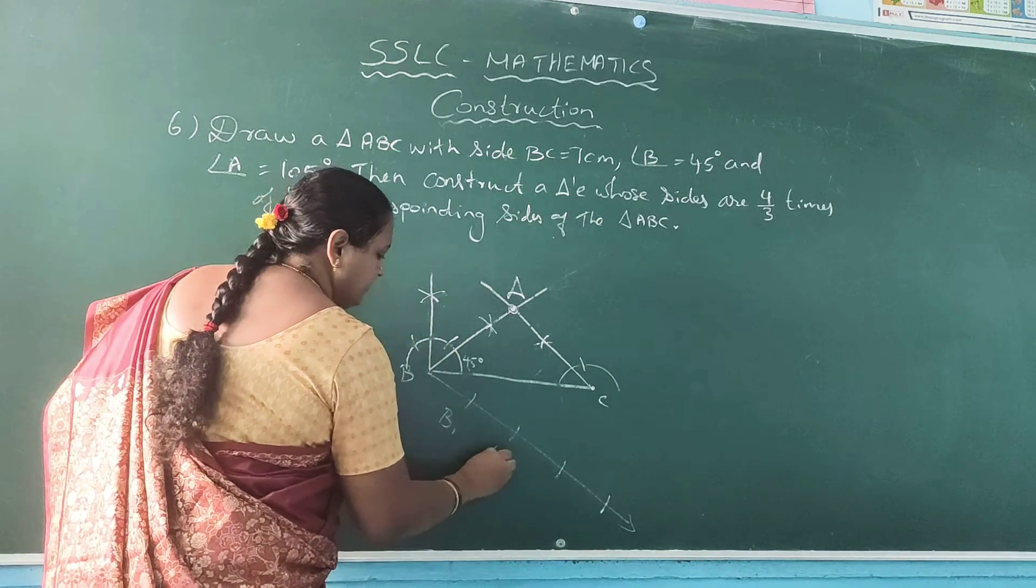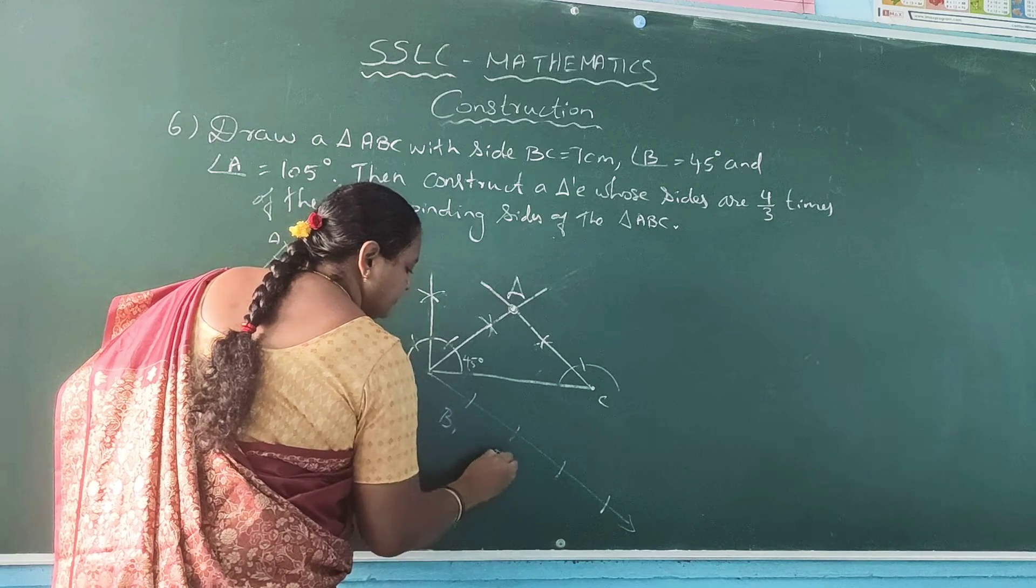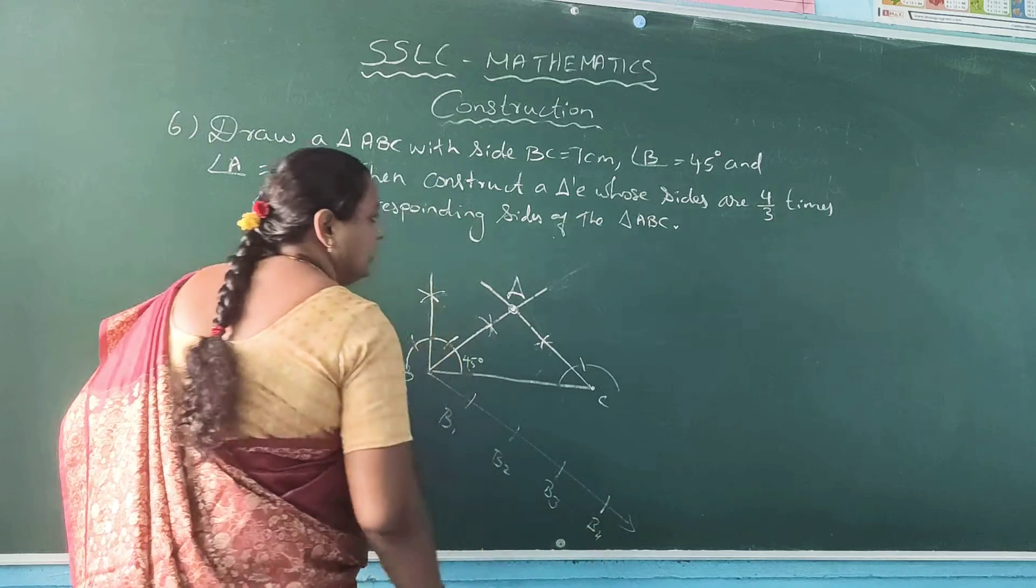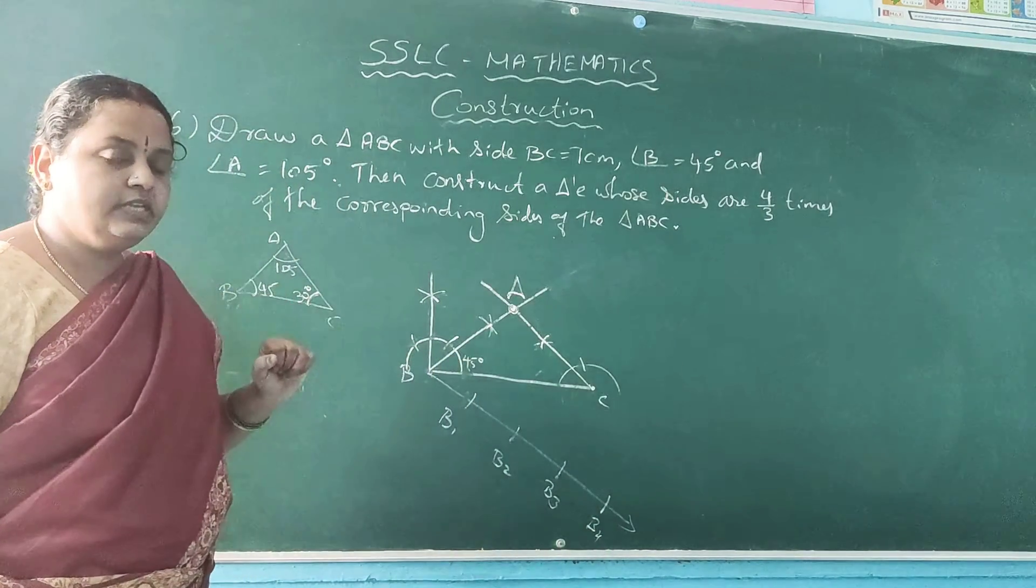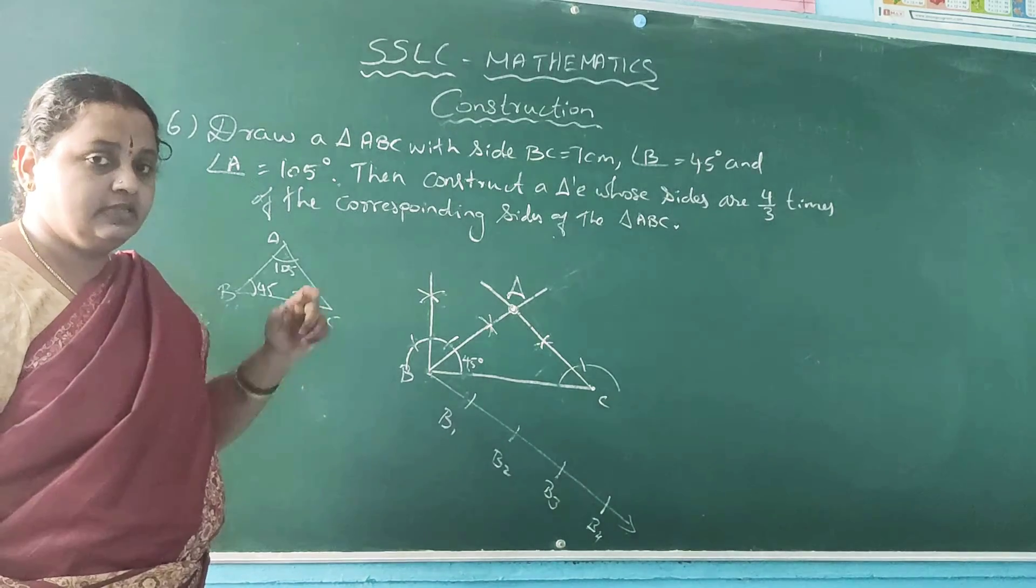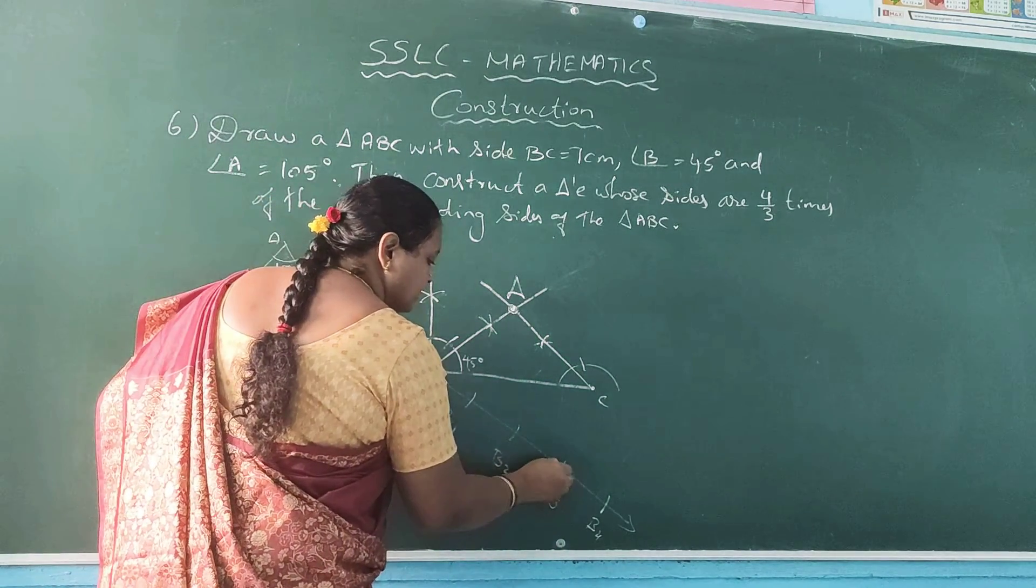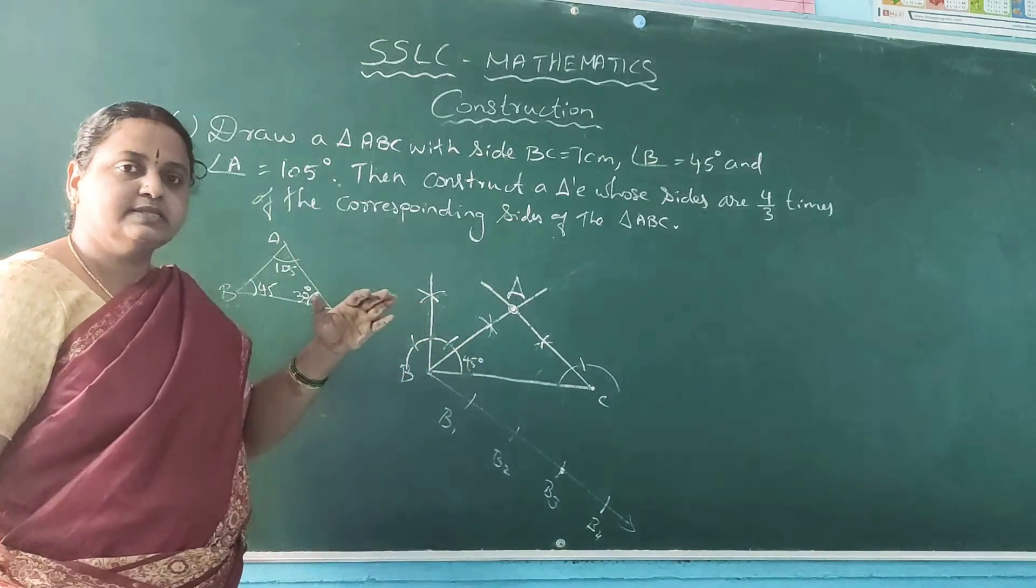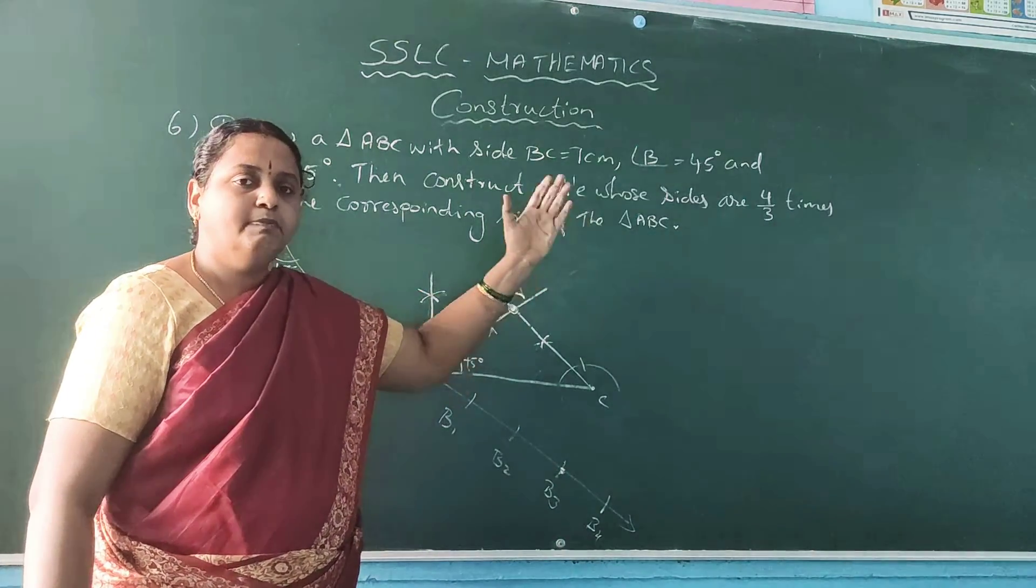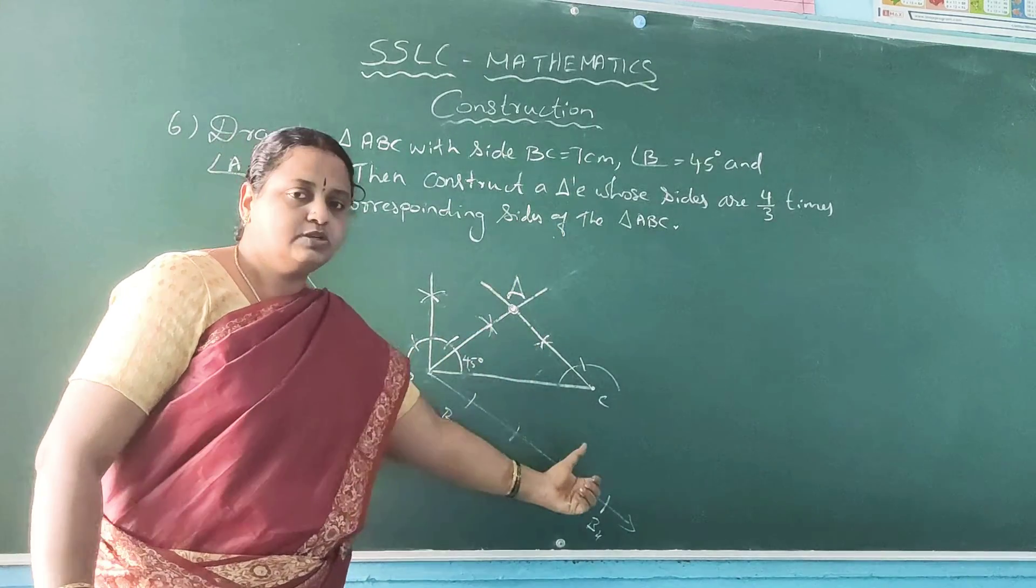Now see the denominator is 3, so third one you should mark. This is another method which I explained. Previous videos I have added the ratio, 4 plus 3, so I will be drawing 7. I will be dividing the line in 7 equal parts.